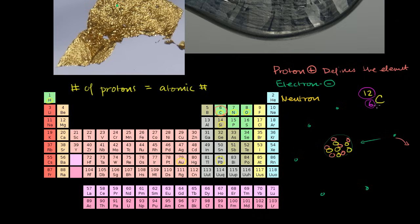In this carbon-12, the first version I described had six protons and six electrons — the charge is canceled out. If I lose an electron, then I only have five electrons and six protons, and I would have a net positive charge.